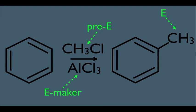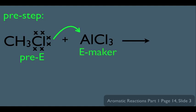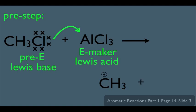Let's look at our pre-step. The alkyl halide reacts with AlCl3 first. Similar to Friedel-Crafts acylation, the electrons on the halogen donate to the Al on the AlCl3. The pre-electrophile is acting as a Lewis base because it is donating electrons, and the electrophile maker is accepting electrons, making it the Lewis acid. What we end up with as a result are these structures: a carbocation, and the AlCl3 has turned into AlCl4- with a negative formal charge.